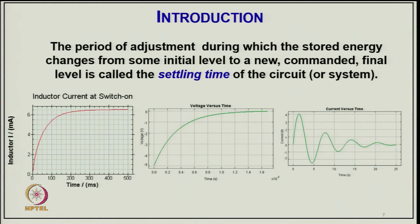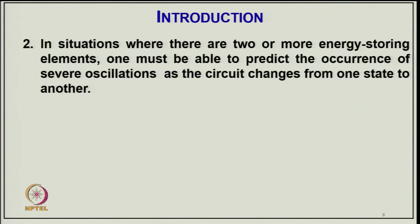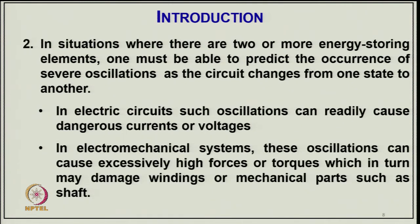Similarly, voltage rises across the capacitors, and there may be oscillatory current in the circuit — for example in an RL circuit, if you are not switching at the power instant there is a possibility of oscillation, which finally settles down to a steady-state value. In situations where there are two or more energy storage elements, one must be able to predict the occurrence of severe oscillations as the circuit changes from one state to another. In electrical circuits, such oscillations can cause dangerous currents or voltages, and in electromechanical systems they can cause excessive high forces or torques, which may damage windings or mechanical parts.